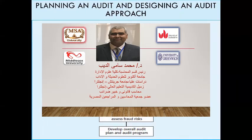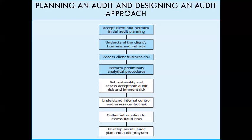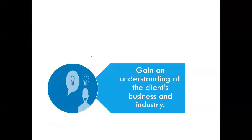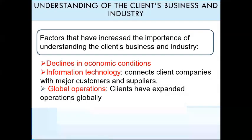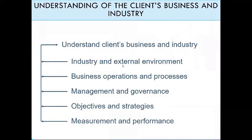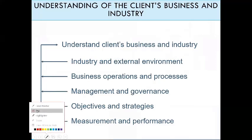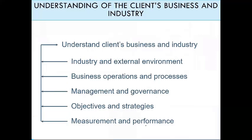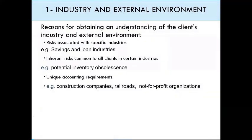Last time we started to talk about Chapter 8, which is about planning and audit design. We started with the first step — whether to accept or reject the client — and the initial audit plan. Then we moved to the second step: understanding the client's business and industry, including information related to the industry, external environment, business operations, process management, governance, objectives, strategies, measurement, and performance.